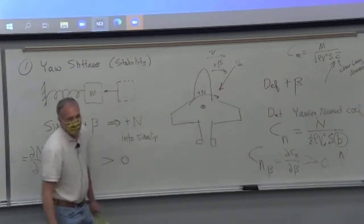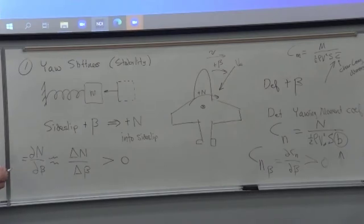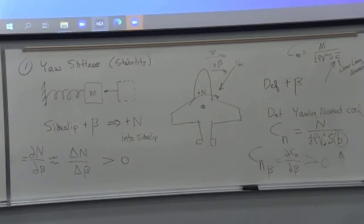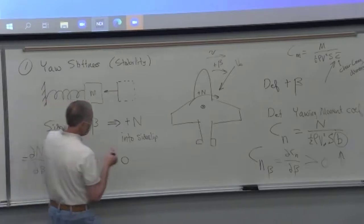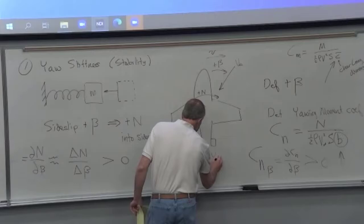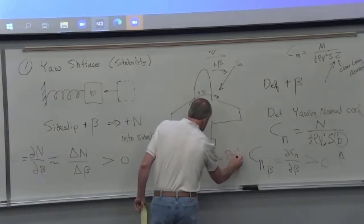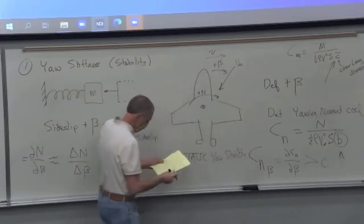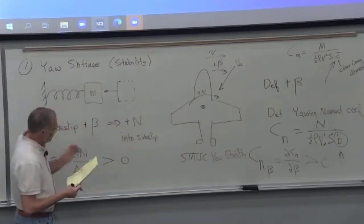We're going into the sideslip tendency — the direction that will reduce beta. We're not saying anything about the motion itself; we're saying a disturbance happens about equilibrium and the response to the disturbance is a force or moment to reduce the disturbance. It doesn't say the disturbance gets reduced — that's the dynamic side. So this is static yaw stability.